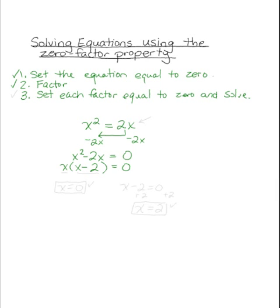Lastly, we will set each factor equal to zero. The factors are the things that are multiplied, so we're talking about the x and the x minus 2. Each of these will be set equal to zero and solved for x. The first one is already done, giving x equals 0. For the second one, I will add 2 to both sides to get x equals 2. Both zero and 2 are answers to this equation, and we've completed step three.